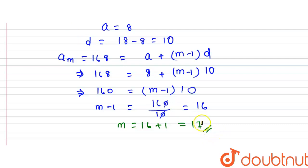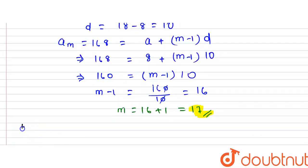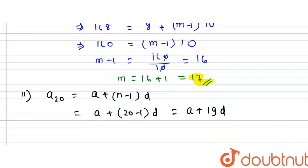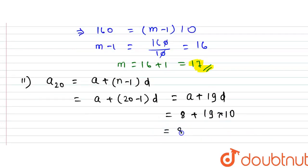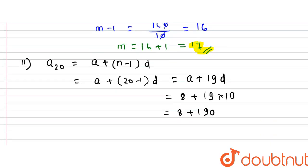The second part asks us to find the 20th term of the AP, that is a20. Using the formula a + (n−1)×d, we get a20 = a + 19d = 8 + 19×10 = 8 + 190 = 198. So the value of a20 is 198. This is our required answer for the second part.